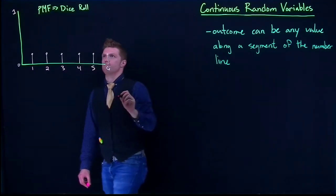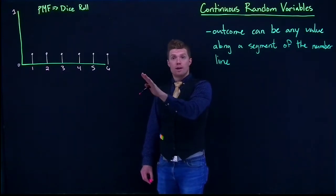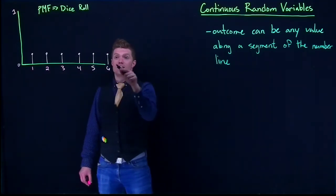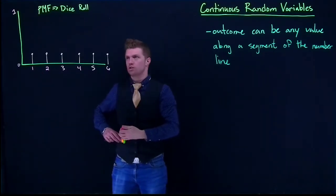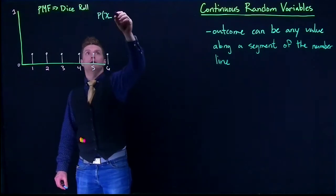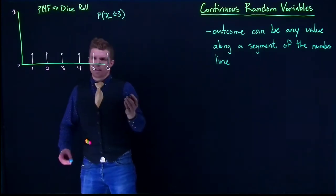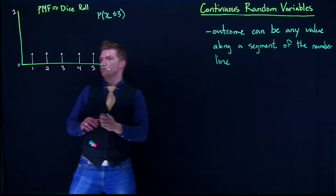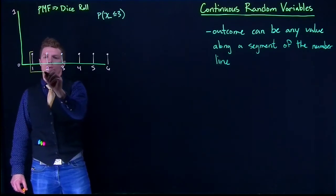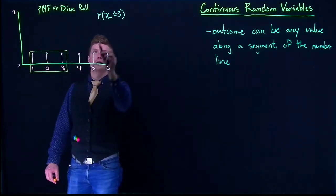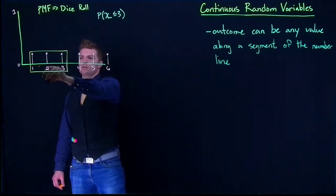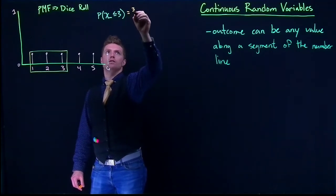The nice thing about our discrete uniform random variable is that every outcome was equally likely, giving us that nice rectangle shape. Now we can solve a probability statement. What is the probability that our dice roll is less than or equal to 3? We circle the values we're interested in — 3, 2, and 1 — and sum up the probabilities: 1/6 + 1/6 + 1/6 = 3/6.